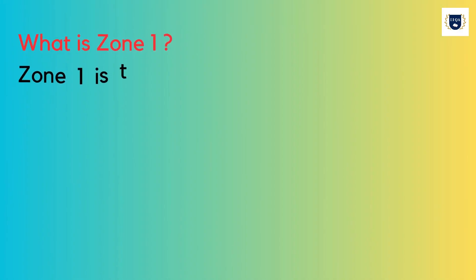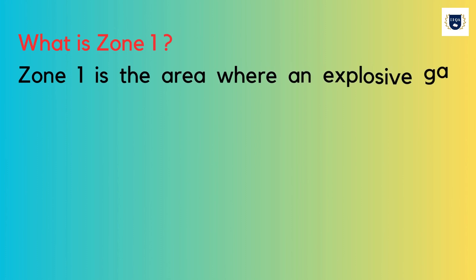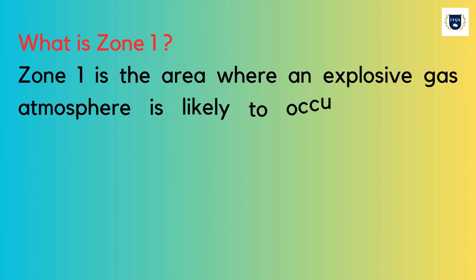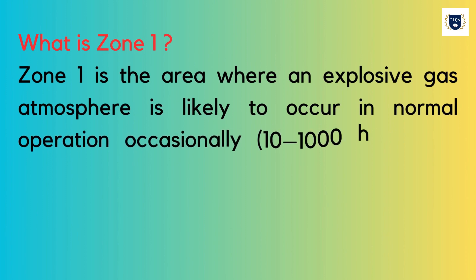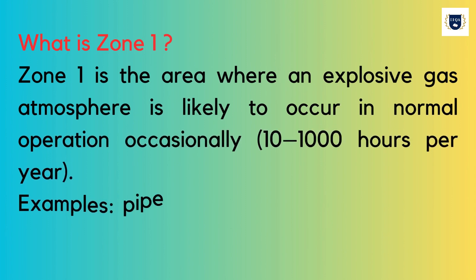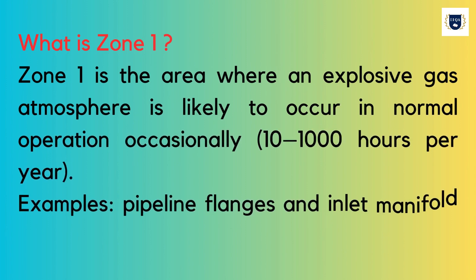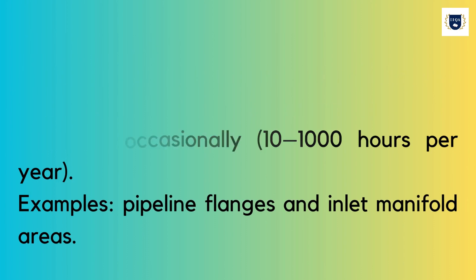What is Zone 1? Zone 1 is the area where an explosive gas atmosphere is likely to occur in normal operation occasionally, between 10 to 1000 hours per year. Examples include pipeline flanges and inlet manifold areas.